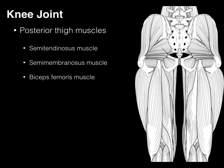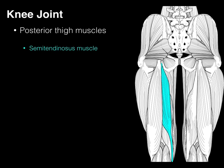The posterior thigh muscles consist of the semitendinosus, semimembranosus, and biceps femoris muscle.